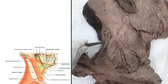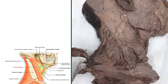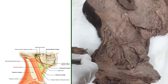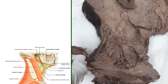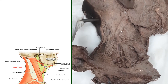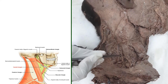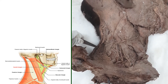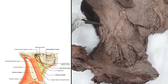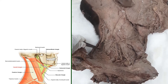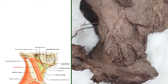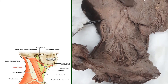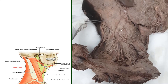The base is formed by the medial one third of the clavicle, and the apex is formed by the joining point of the trapezius and the sternocleidomastoid muscle.